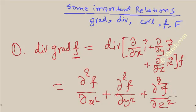This is also called del squared f. So del squared f is nothing but div of grad of f.